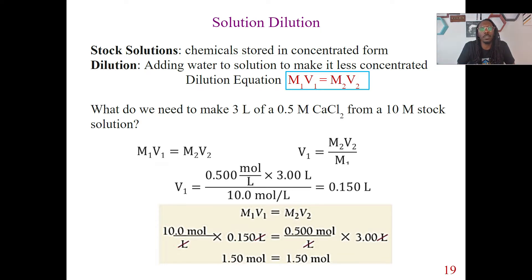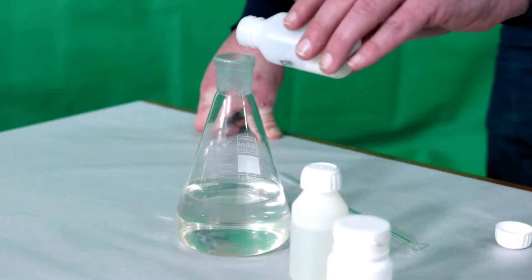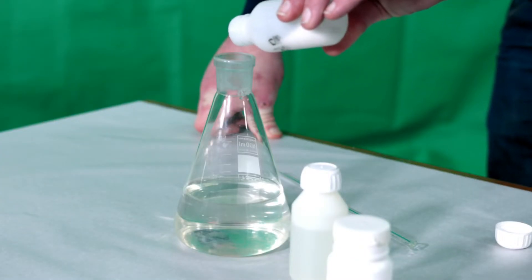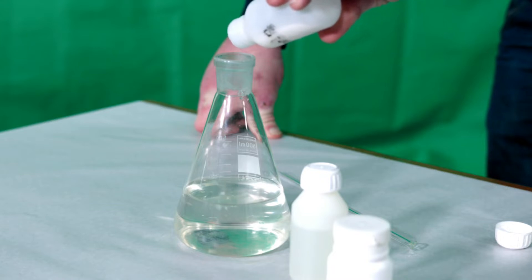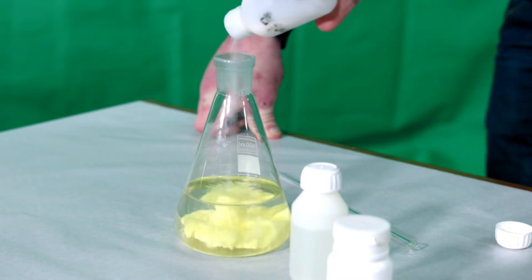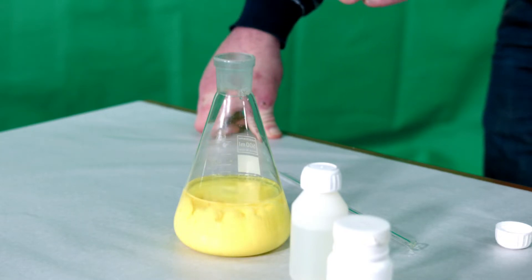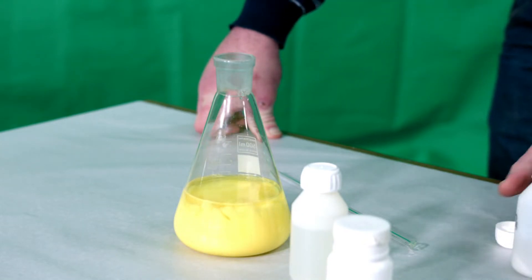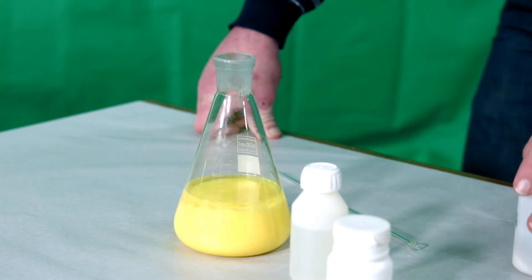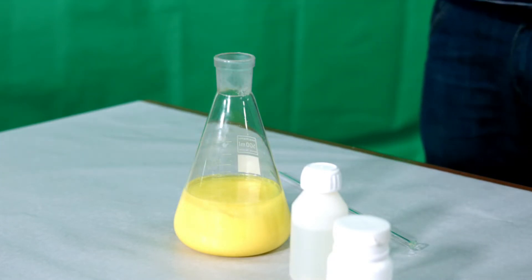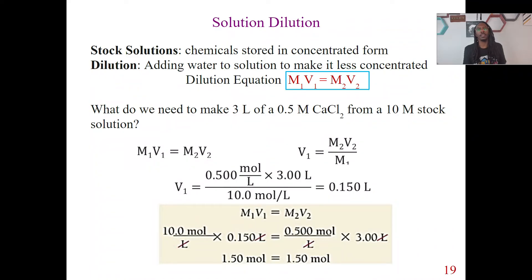So specifically, what is a stock solution? A stock solution is basically where our chemicals are being stored in a concentrated form. So if you've ever been in a lab, if you go in the back, you've never seen this part, but basically we have these stock solutions that are very, very concentrated. Because we have these concentrated solutions, we actually have to dilute them in order for people to use them. So for instance, in your general chemistry labs, you're probably using diluted solutions that your lab staff has diluted for you.